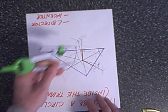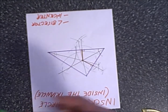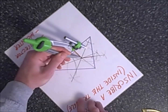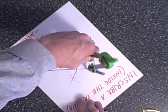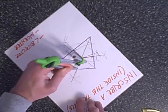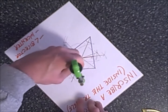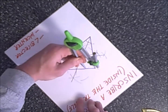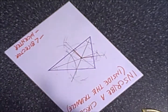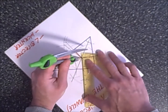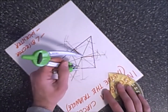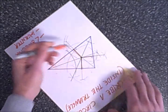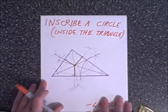Starting again at the incenter, we draw an arc through this other side. Then from each of the intersecting points, we draw an arc up here and an arc here. Again, we draw our perpendicular segment. So we have our third perpendicular line — I'll highlight it in orange as well. So we have these three segments highlighted in orange. They're all perpendicular, and they are the same distance from the incenter to each side.